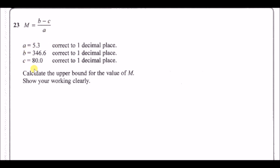Number 23: the equation is m = (b − c) / a, where all three variables are rounded to one decimal place. Calculate the upper bound for m. When something is correct to one decimal place, the value could have been anywhere within half a unit either side — so we set bounds like 5.25 ≤ a < 5.35.